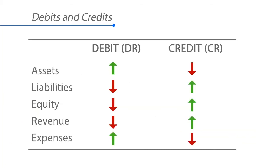Accounting prefers the terms debits and credits, which are sometimes abbreviated DR and CR — DR for debit, CR for credit. These terms are used to avoid the confusion that could arise if you use symbols or words like plus, minus, increase, or decrease.